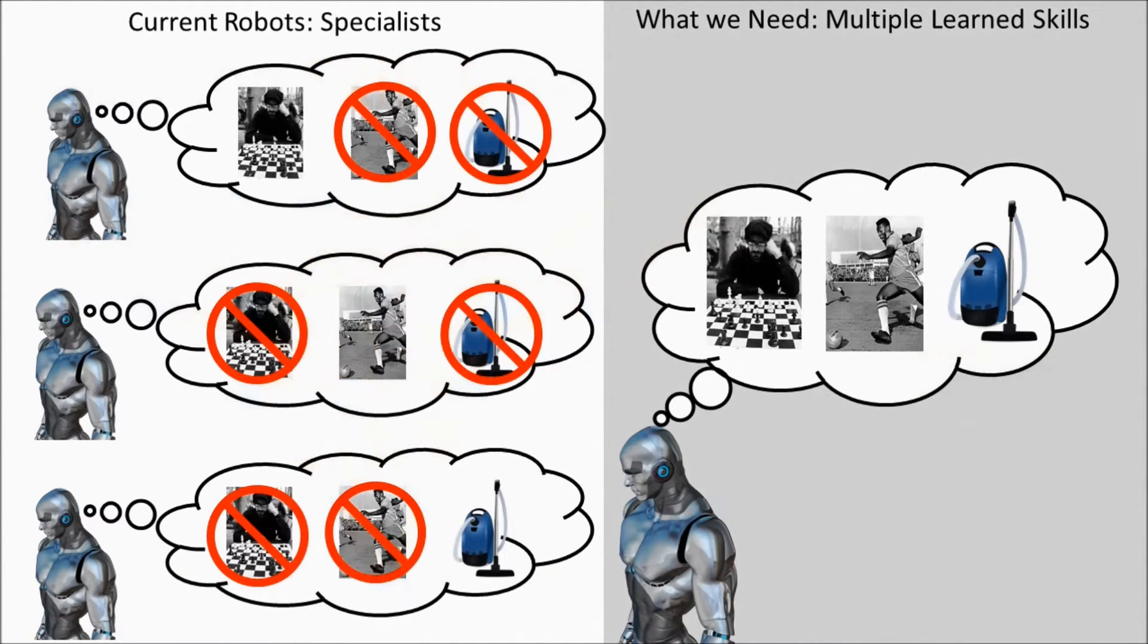Because of catastrophic forgetting, current robots and computers have a difficult time learning many different tasks in a sequence. Being able to avoid such forgetting would greatly increase the benefits robots can provide for society.